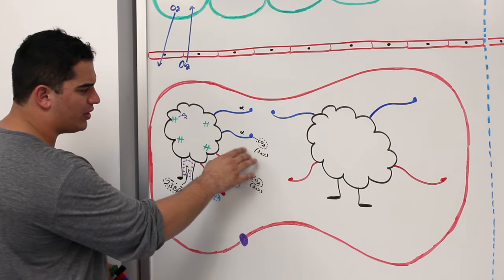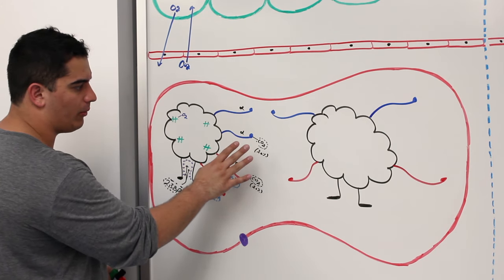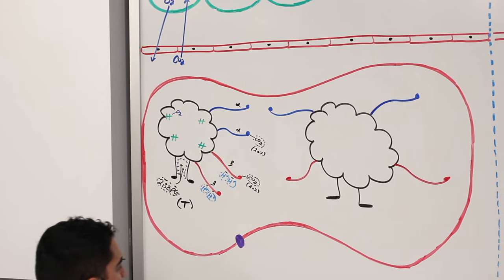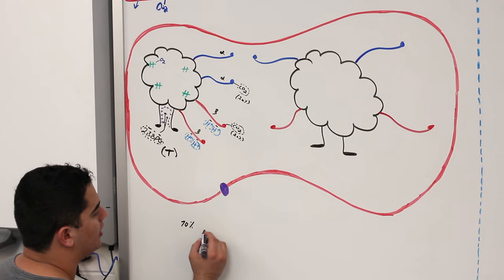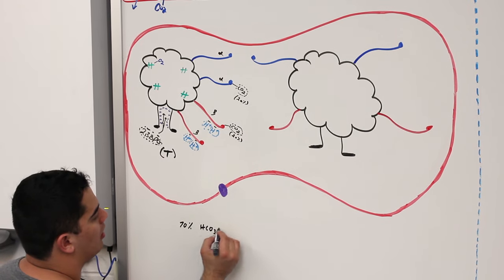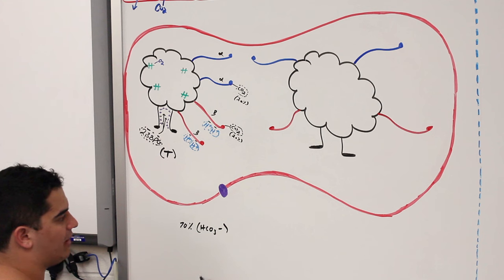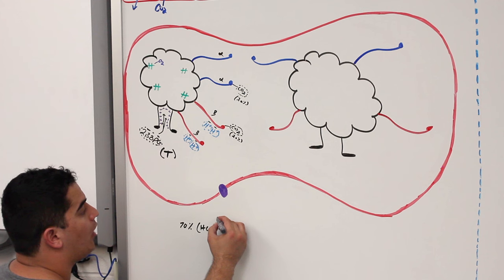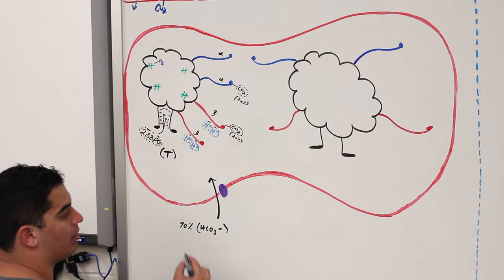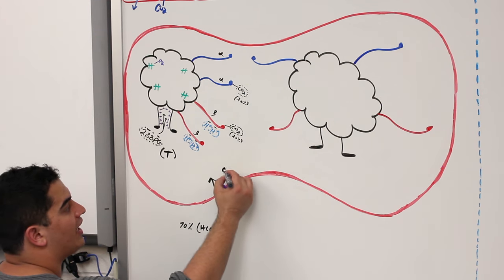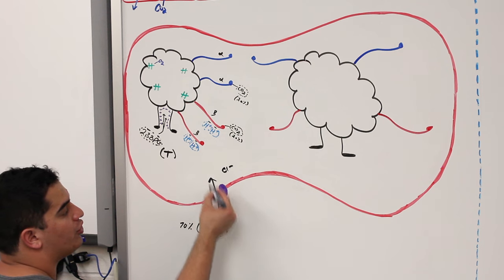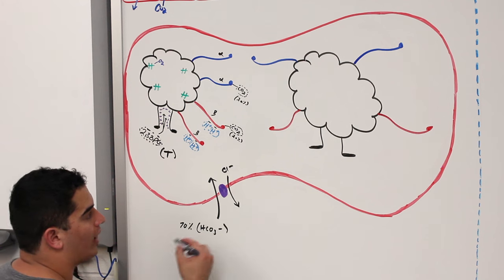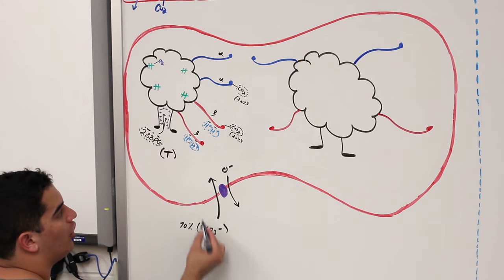20% of CO2 is in the form of carbaminohemoglobin. The most abundant form is bicarbonate — 70% of CO2 is hidden in the form of bicarbonate, which is very abundant within the plasma where it controls acid-base balance. That bicarbonate moves into the red blood cell, and to counteract electroneutrality — negative charge moving in — we have negative charges going out. That's called the chloride shift.